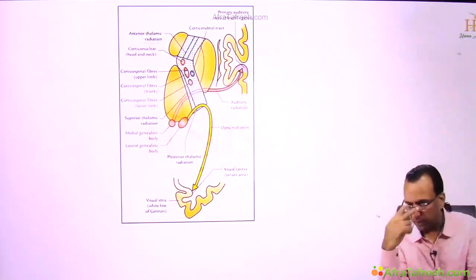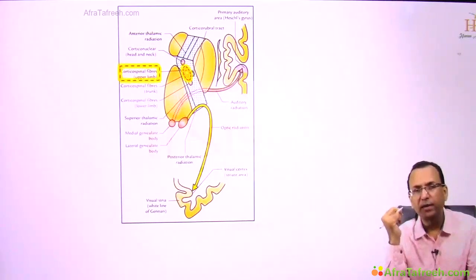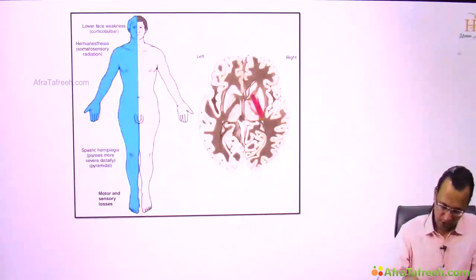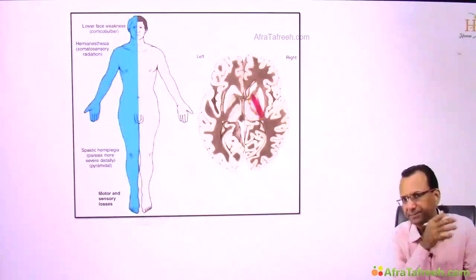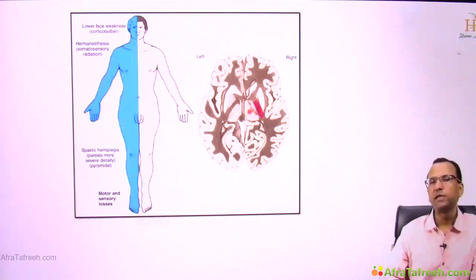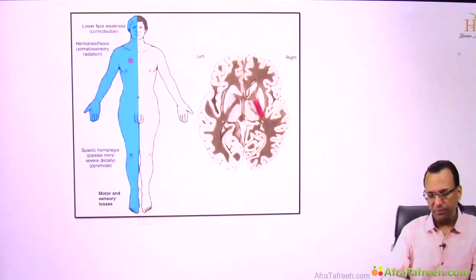To summarize: the corticonuclear tract for moving the eye is in the genu, and the corticospinal tract is in the posterior limb to move the fingers. If there is a lesion on the right side of the brain involving the genu and posterior limb, there will be problems on the left side of the body involving both the head and the body. If only the posterior limb is involved, the problem is restricted to the upper limb, trunk, and lower limb — the face area is spared.